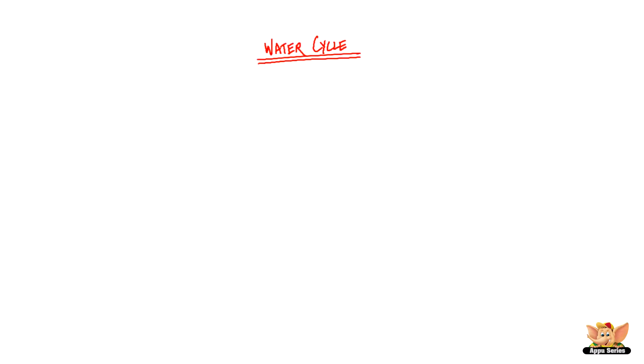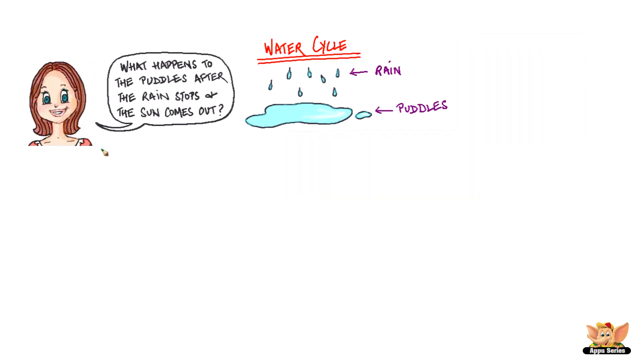Water cycle. I'm sure you've seen rain fall and make puddles in your backyard. What happens to the puddles after a while when the rain stops and the sun comes out? The water dries up and disappears.